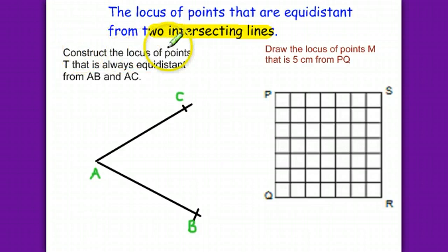Construct the locus of points T that is always equidistant from AB and AC. This is AB and this is AC. You know that the locus is a line right in the middle here. To construct that, we will bisect this angle—bisect angle A.